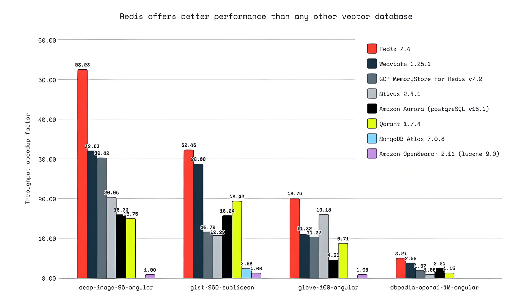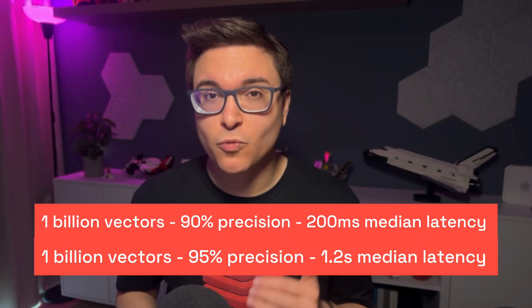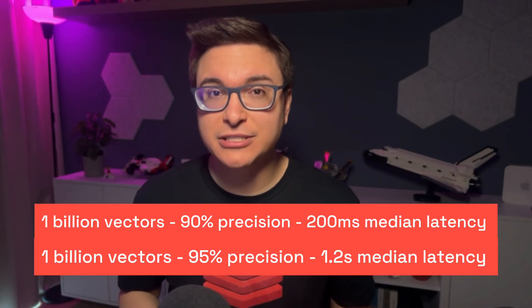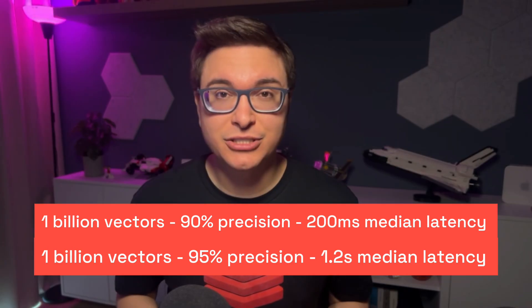And here's the best part. According to our benchmarks, Redis 8 — the newest version of Redis — is the fastest vector database out there. It can scale to 1 billion vectors and still deliver low-latency search.